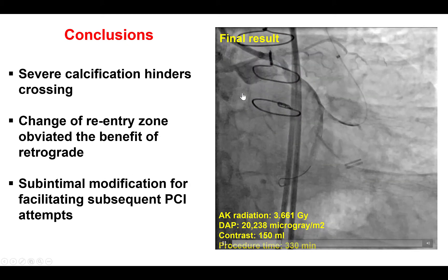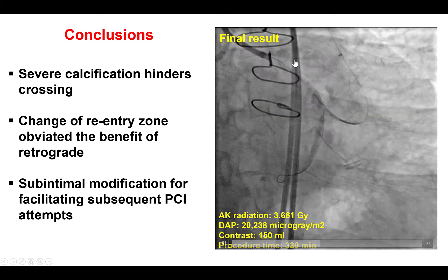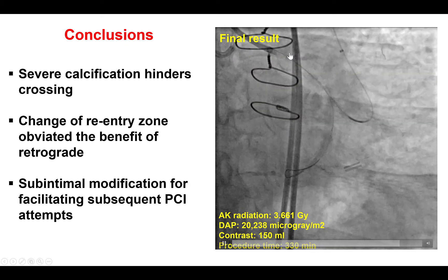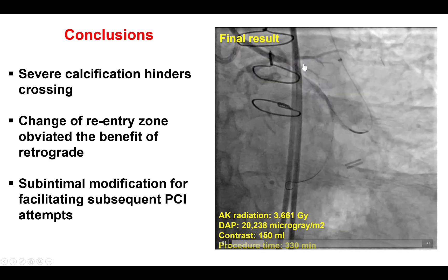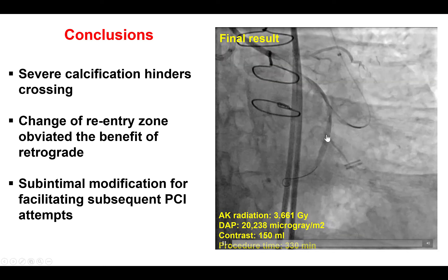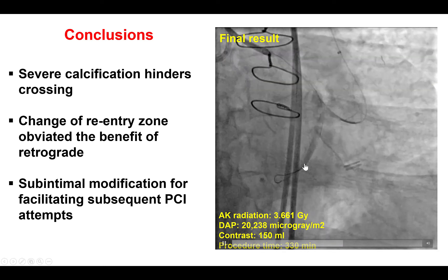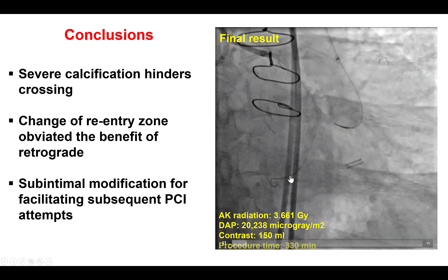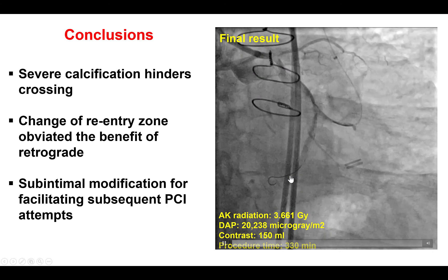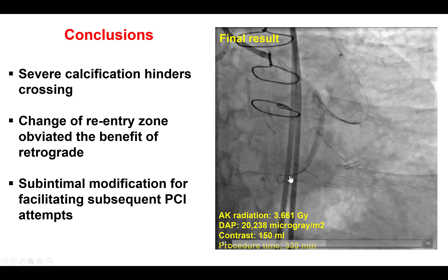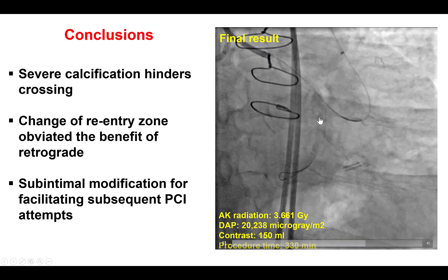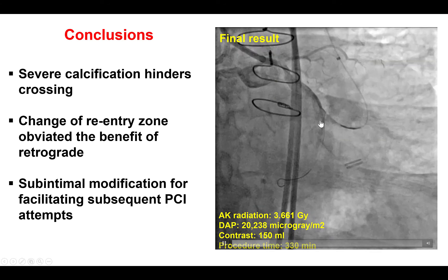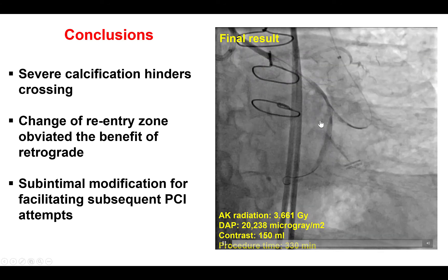However, in cases like this, when everything fails, one approach is to perform balloon angioplasty that restores some antegrade flow into the vessel, followed by subsequent PCI attempts in two to three months once the dissection planes have healed. Thank you.